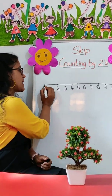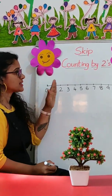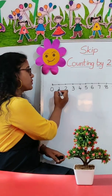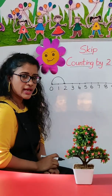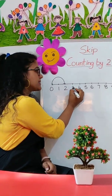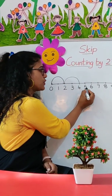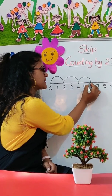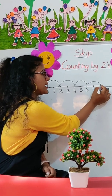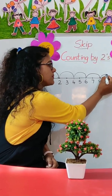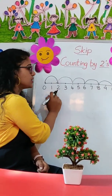Imagine if we are starting from zero, and I tell you to skip by number two — you have to skip this number and jump over two. Next, I am going to skip three and jump to four. I am going to skip five and jump to six. I am going to skip seven and jump to eight. I am going to skip nine and jump to ten. So I have skip counted by twos.